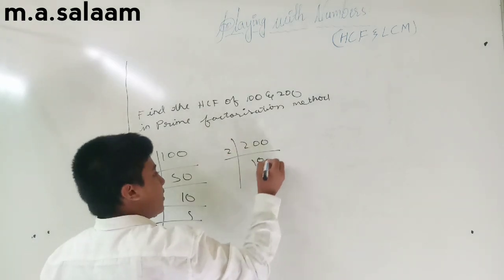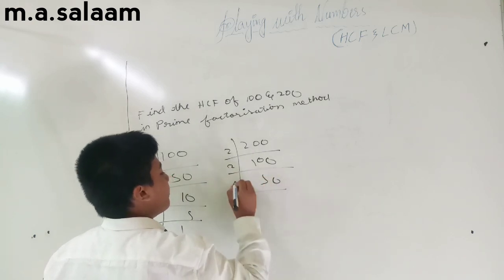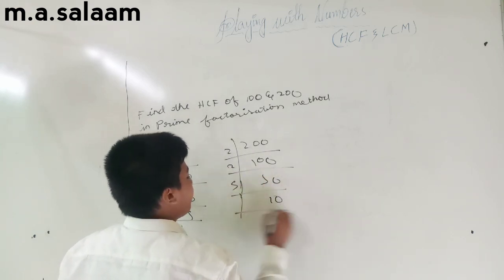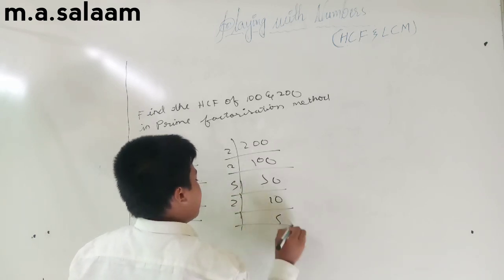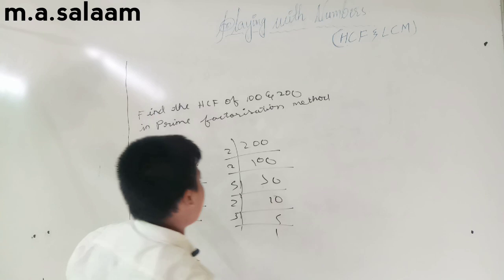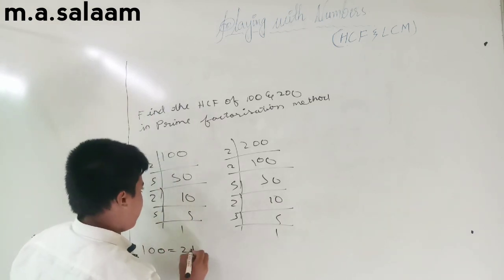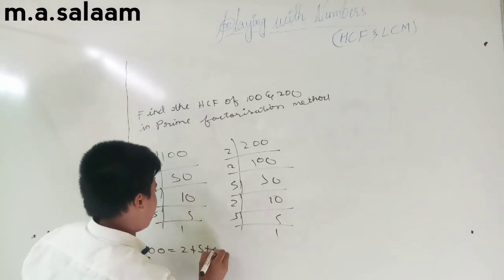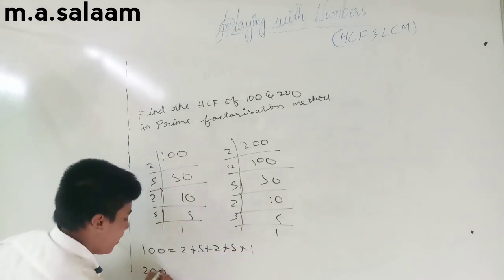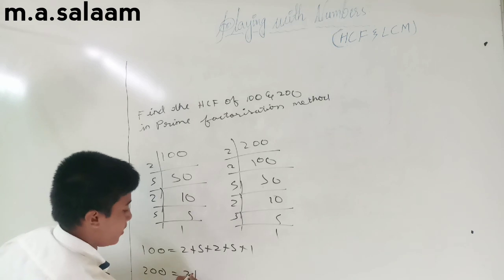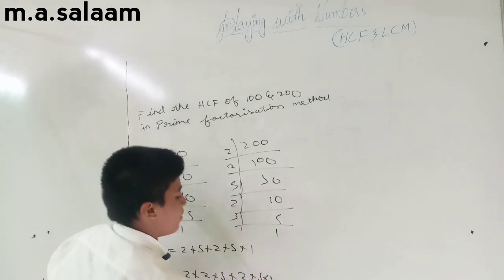Dividing step by step: 2 into 100 gives 50, 2 into 50 gives 25, 5 into 25 gives 5, 5 into 5 gives 1. Similarly for 200. So 100 equals 2 × 2 × 5 × 5 × 1, and 200 equals 2 × 2 × 2 × 5 × 5 × 1.